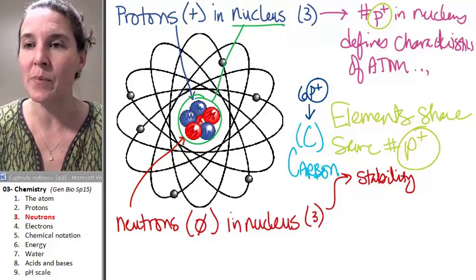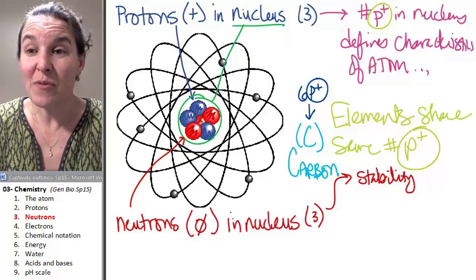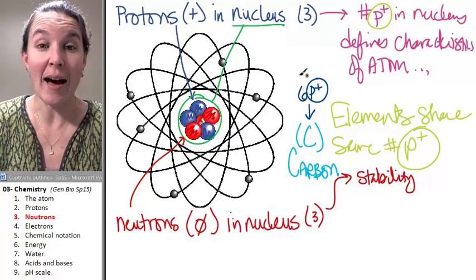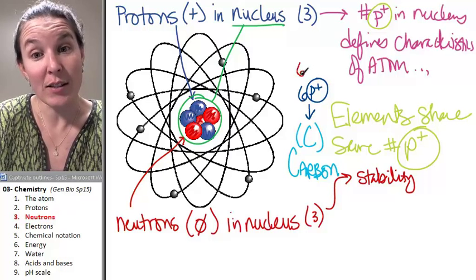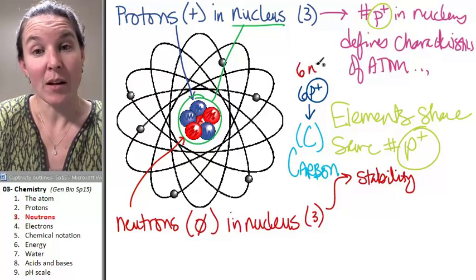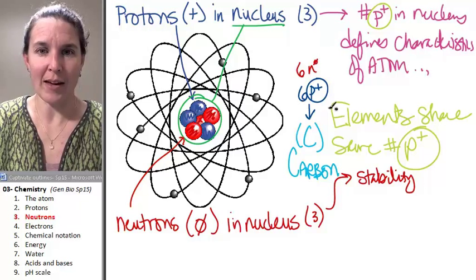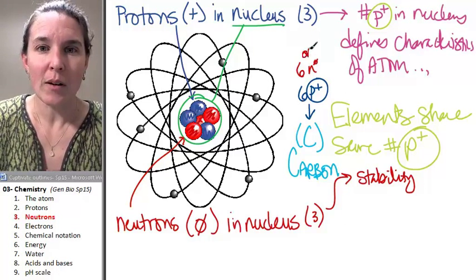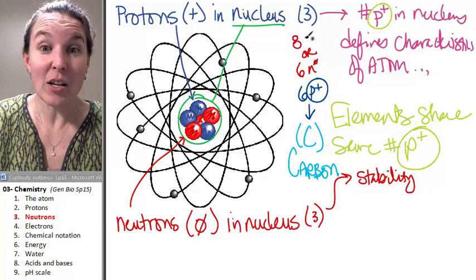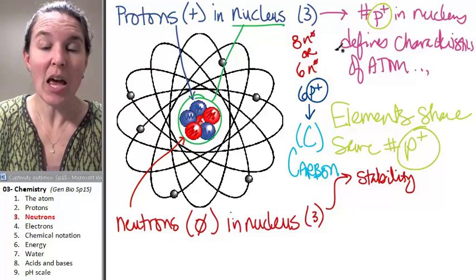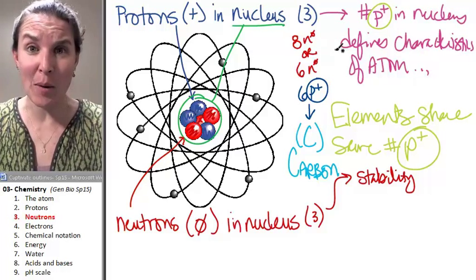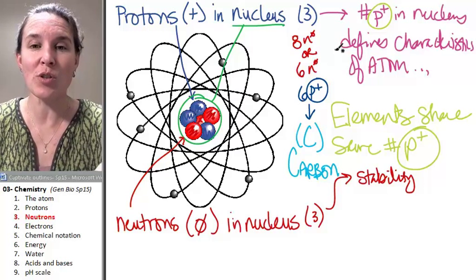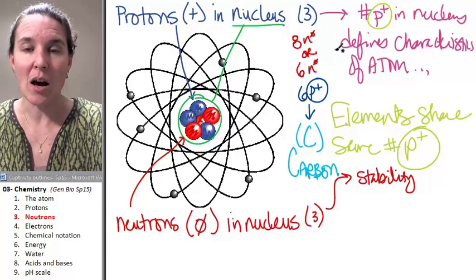I'm going to tell you right now that you have different flavors of carbon atoms. You can have carbon atoms that have six neutrons or you can have eight neutrons. You can actually probably have any number of neutrons in the nucleus of a carbon atom. But again, they contribute to the stability of the atom.